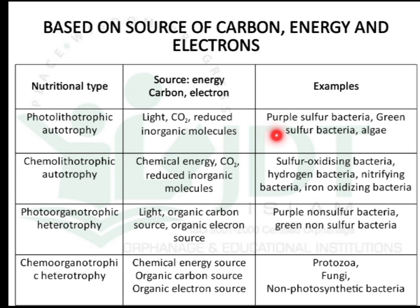Examples of photolithotrophic autotrophs are purple sulfur bacteria, green sulfur bacteria, and algae. The second classification is chemolithotrophic autotrophs, where chemical energy is used, reduced inorganic molecules are used for electron source, and carbon dioxide is used for carbon source. Examples are sulfur oxidizing bacteria, hydrogen bacteria, nitrifying bacteria, and iron oxidizing bacteria.